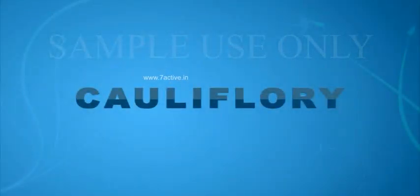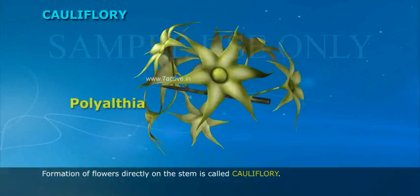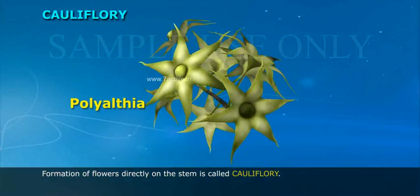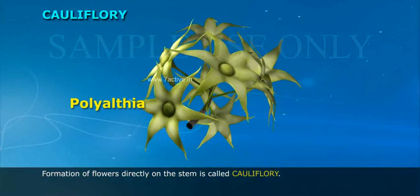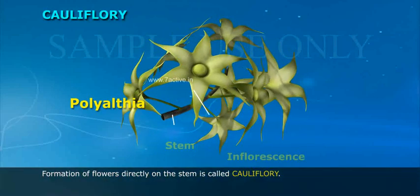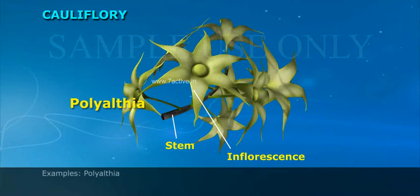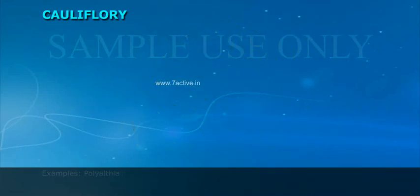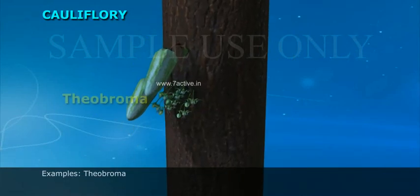Cauliflory: The formation of flowers directly on the stem is called cauliflory. Examples: Polioletria, Theobroma.